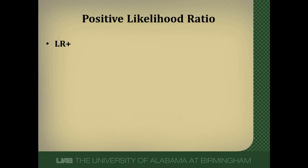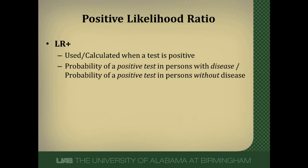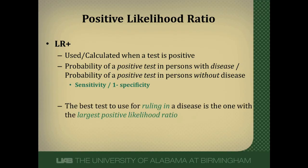There are two likelihood ratios: positive and negative. A positive likelihood ratio is used when the test result is positive. It's the probability of a positive test in persons with disease divided by the probability of a positive test in persons without disease. The probability of a positive test in people with disease is sensitivity, so sensitivity is in the numerator of a positive likelihood ratio, and one minus specificity is in the denominator. The higher the positive likelihood ratio, the greater will be that test in increasing our post-test probability. So if you want to rule in disease and have multiple tests to choose, pick the one with the largest positive likelihood ratio.